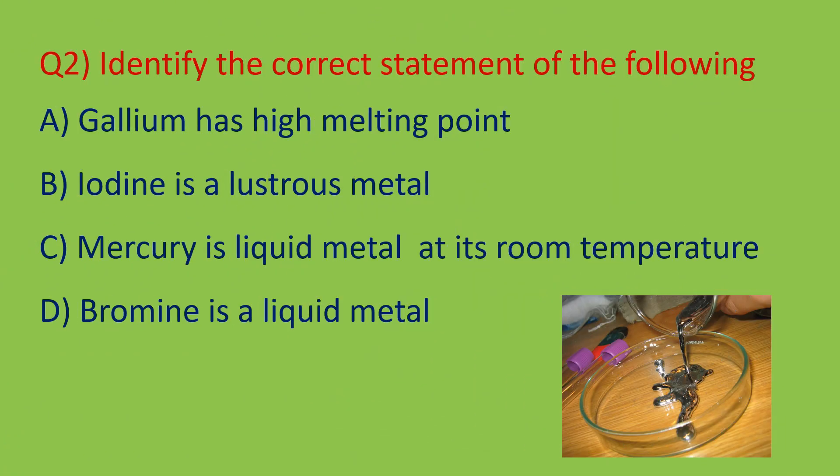Question number two: identify the correct statement from the following. Option A — gallium has a high melting point — is wrong, because gallium has a low melting point. Option B — iodine is a lustrous metal — is also wrong; iodine is lustrous but it is a non-metal.